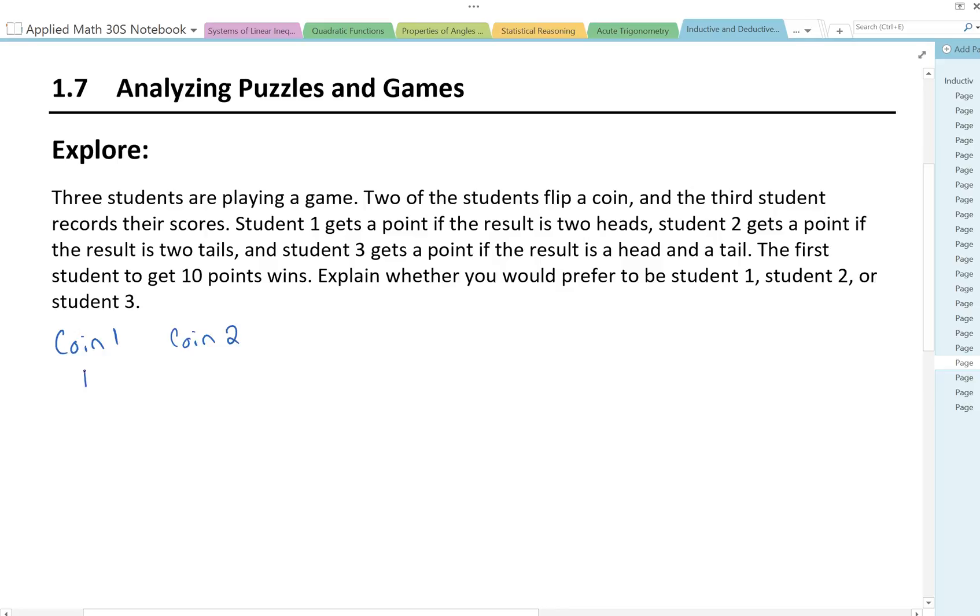Coin 1 could be heads and coin 2 could be tails. Or coin 1 could be tails and coin 2 could be heads. They could both be heads, or they could both be tails.